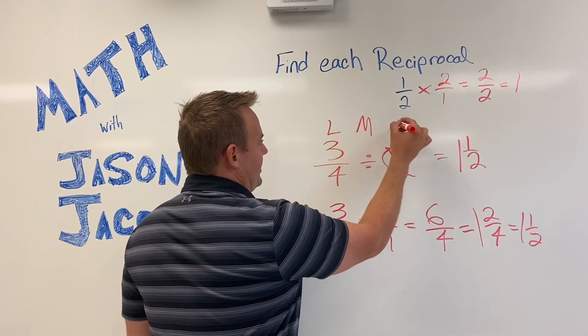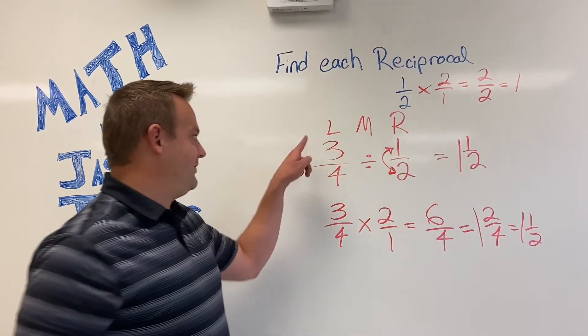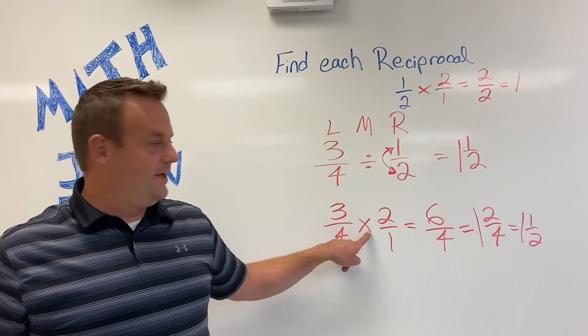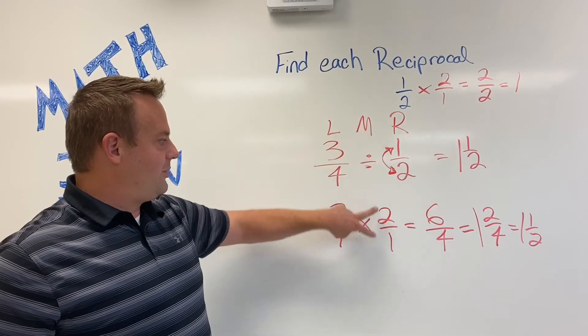Here's how I like to remember it. Left side, leave it. Middle, multiply. Right side, reciprocate. Left side, three fourths, we will leave it. Middle, multiply. Right side, reciprocate.